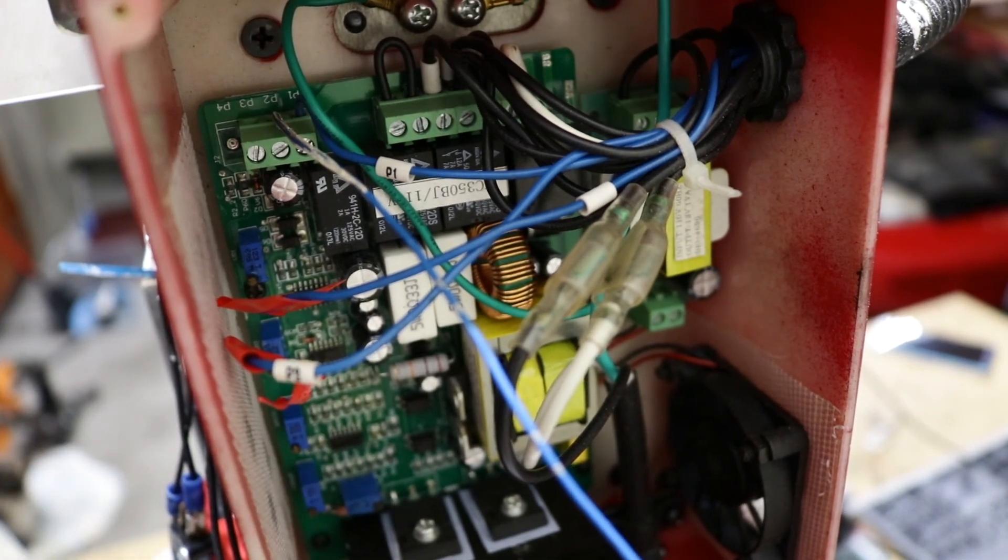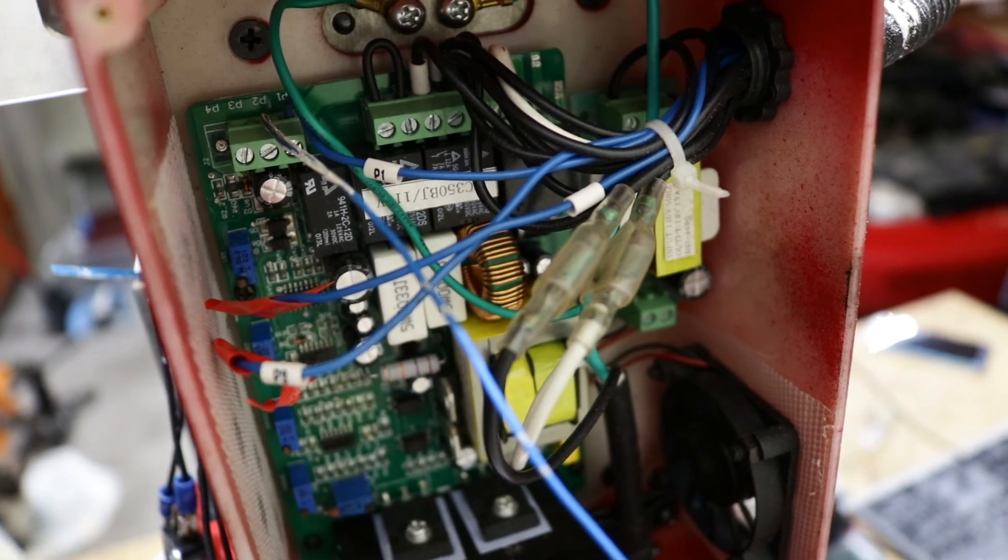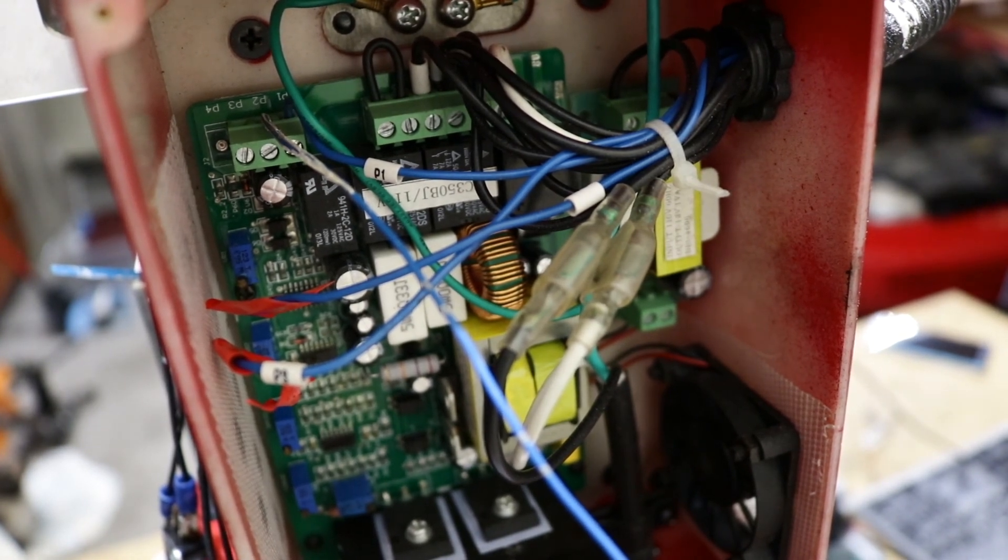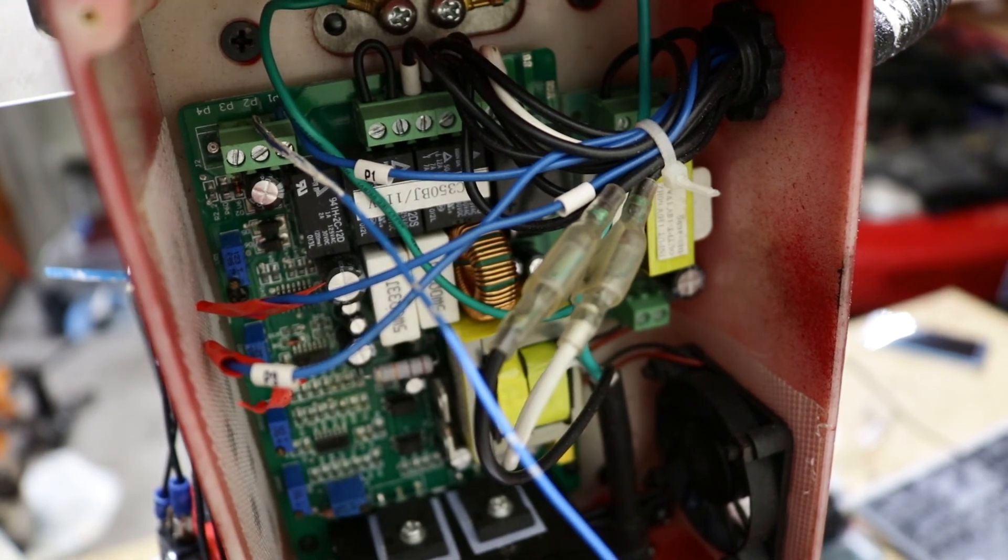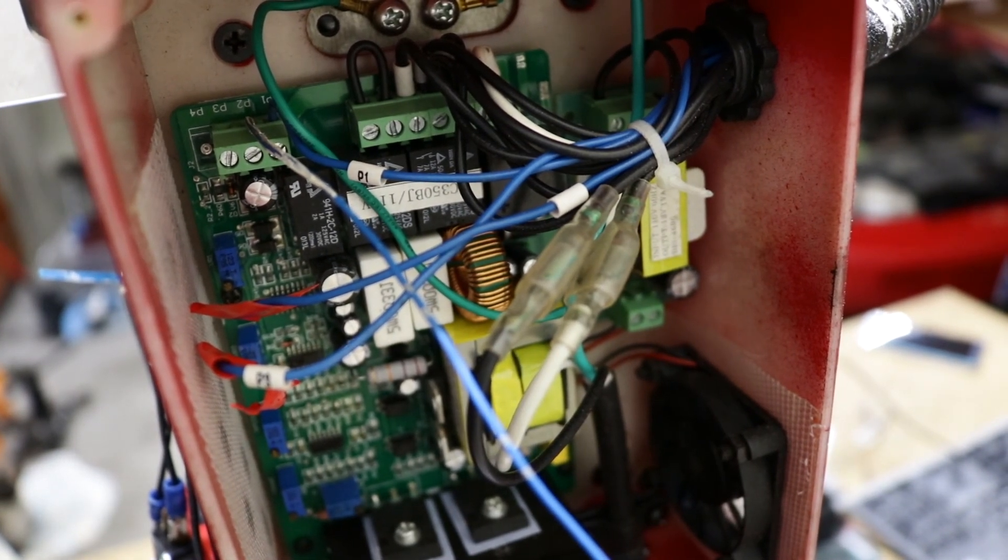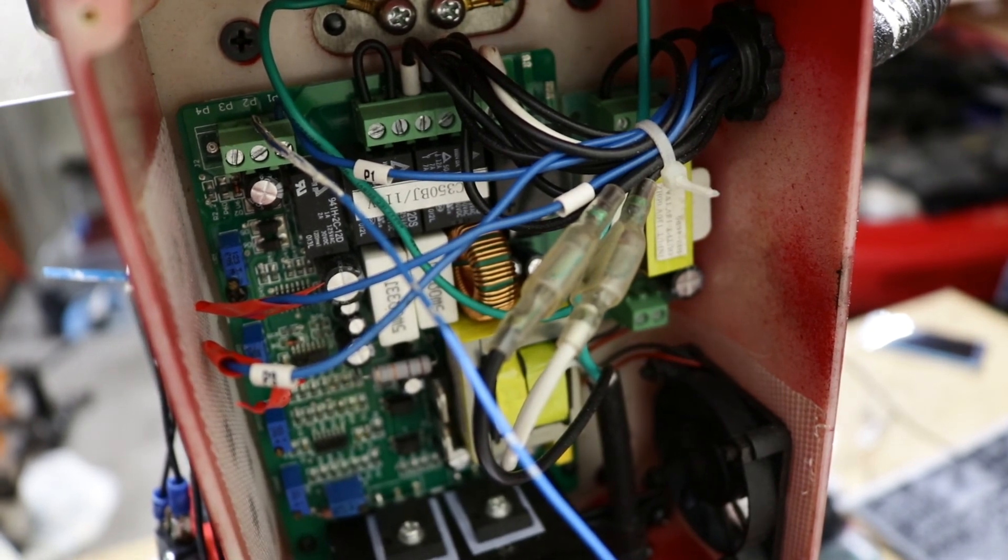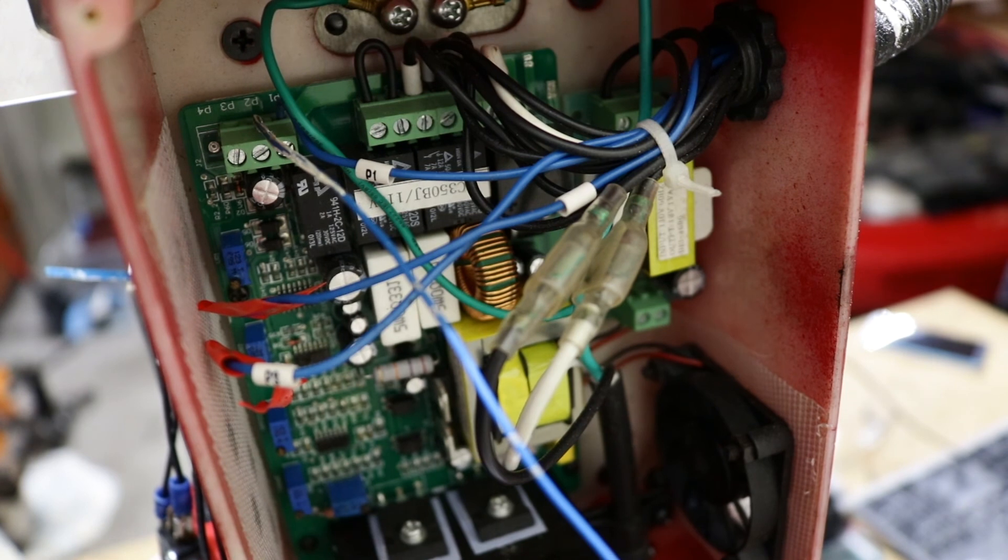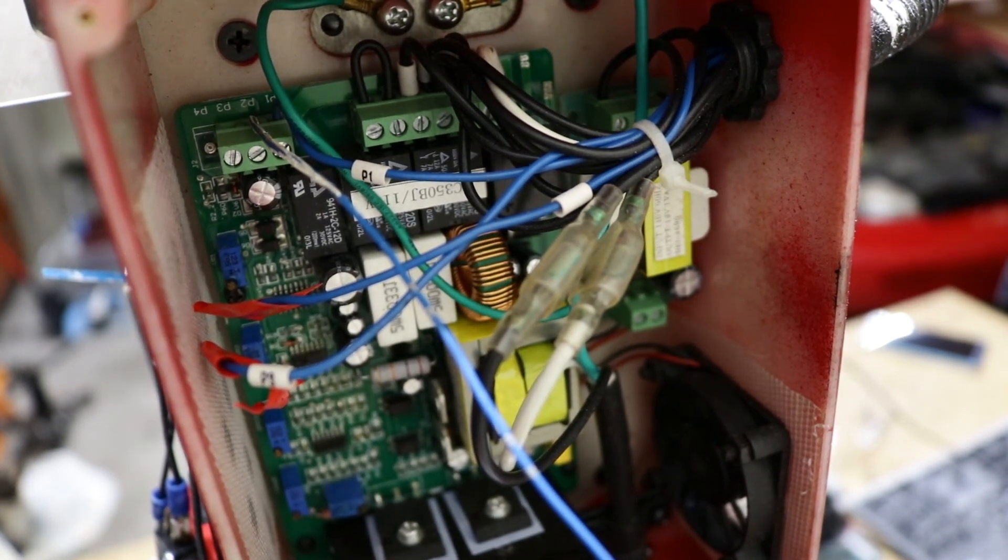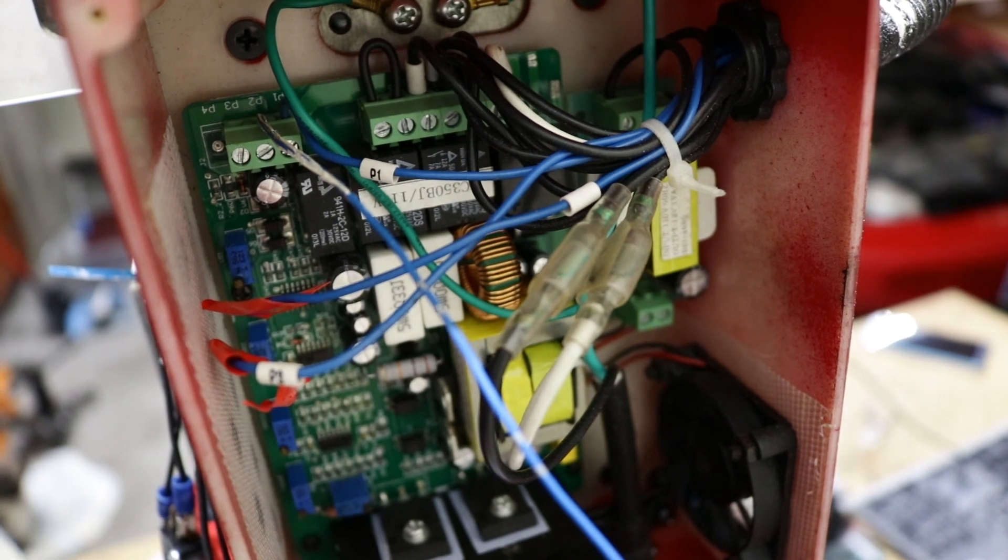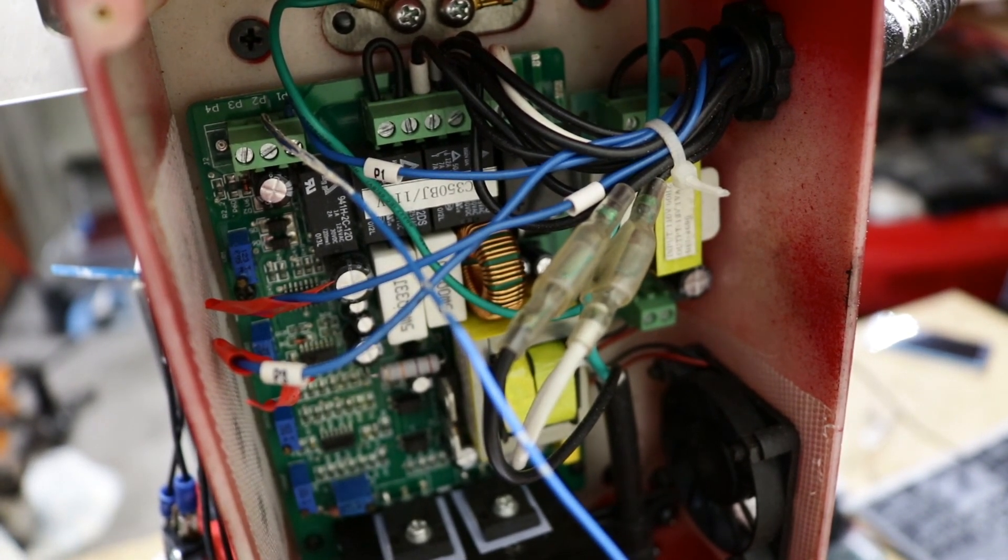Basically pin 2 is going to be where you plug that 0 to 12 volt signal and pin 3 is going to be the ground. You just want to tape off the wires you disconnect, plug your new wires from whichever board you decide to use, plug them into there and you should be good to go.